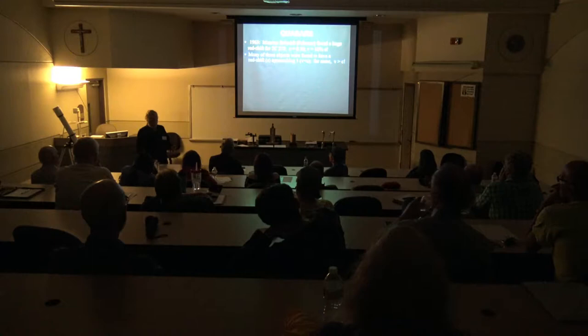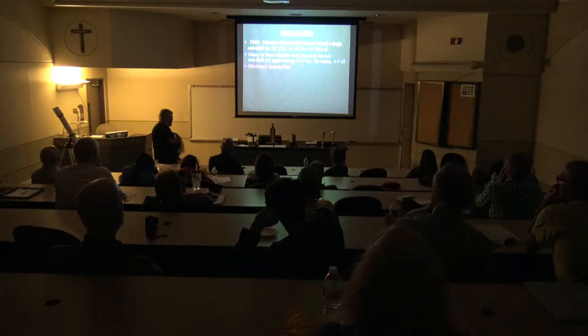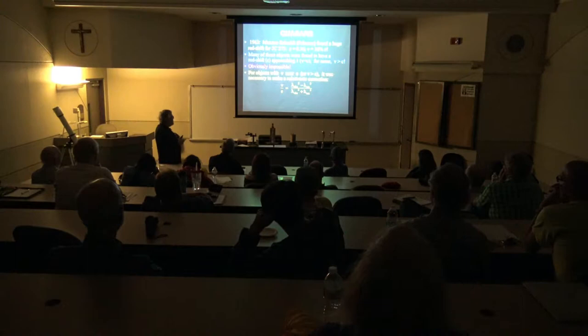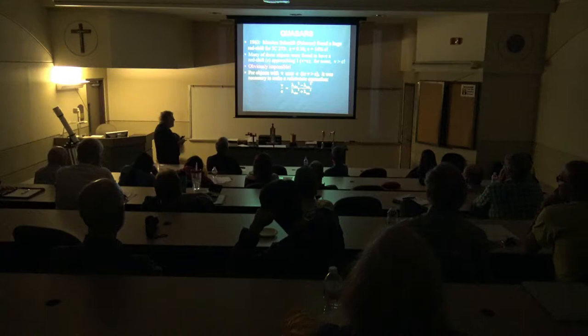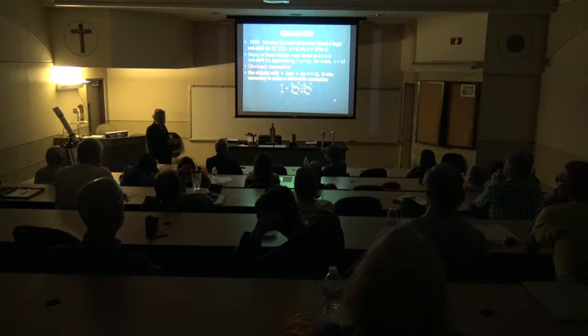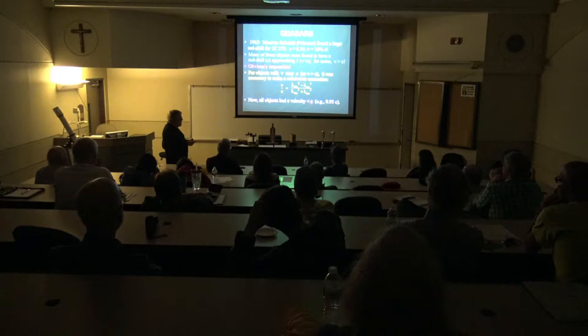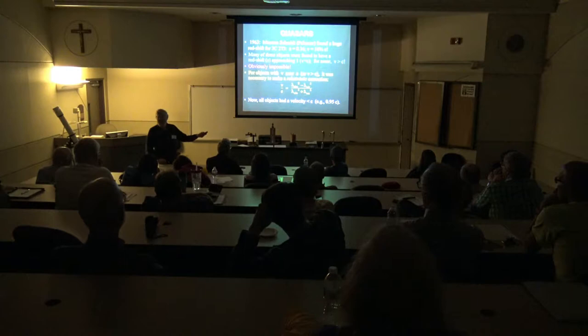For some objects, the velocity would come out greater than the speed of light using the simple formula — obviously impossible. The simple formula is too simple for relativistic speeds near the speed of light, so a more complicated relativistic version must be used. With that correction, all analyzed objects had velocities less than the speed of light, like maybe 95% of the speed of light.